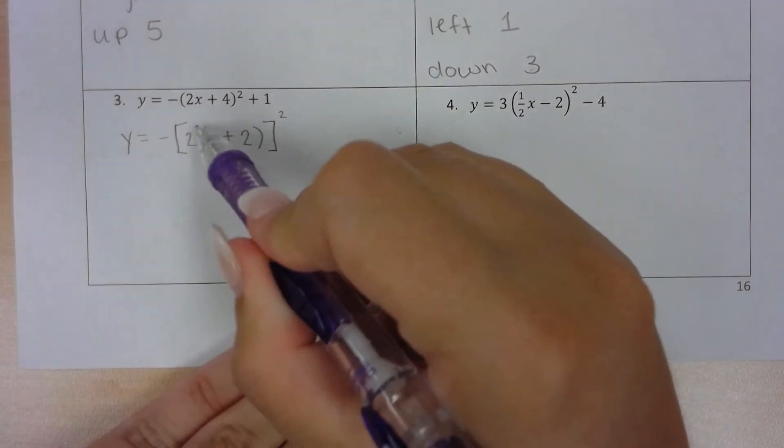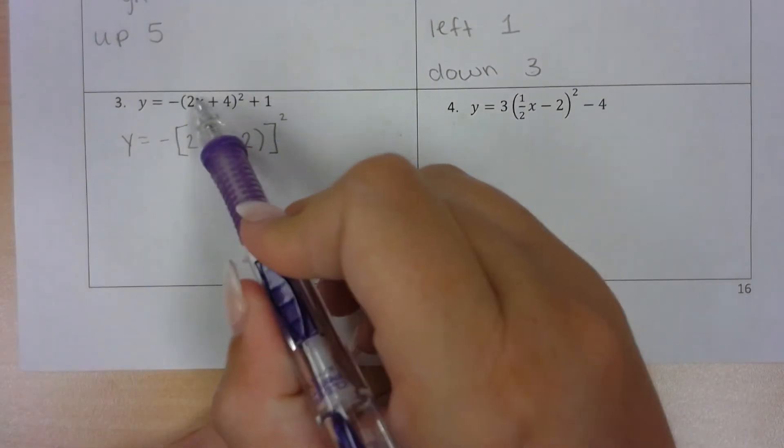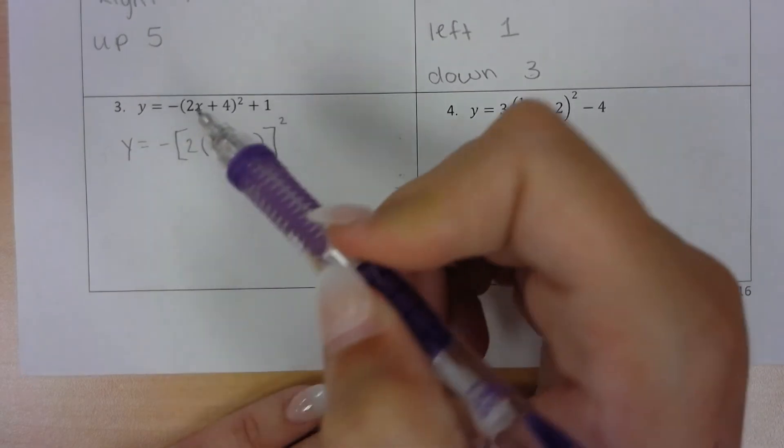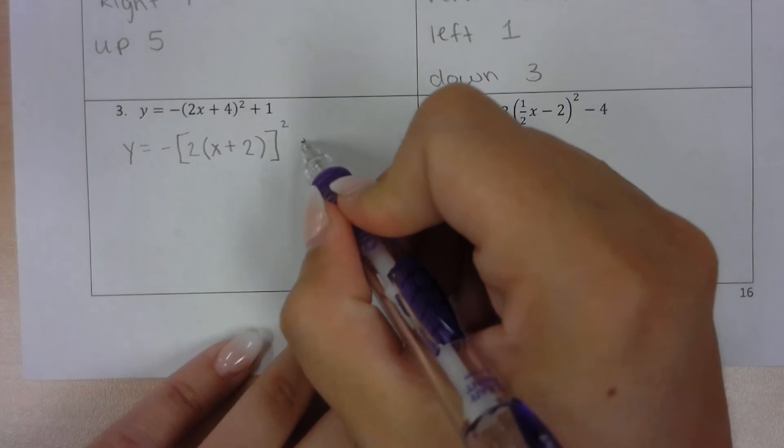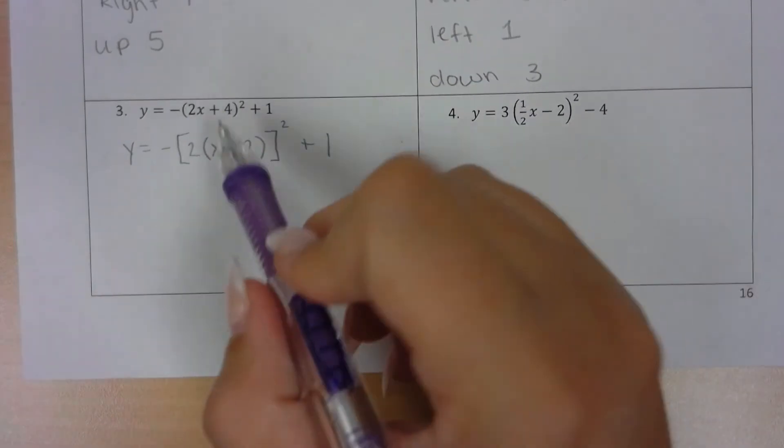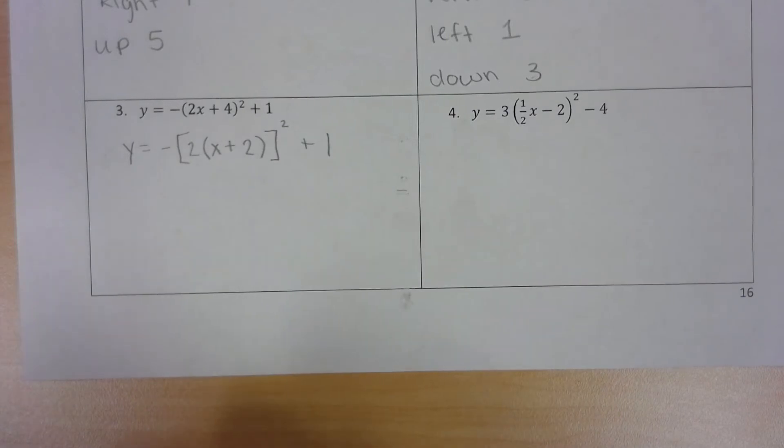Right, if I were to distribute this out, I would have 2x plus 4. So I factored out the GCF of 2. Factoring out, I divide it. 4 divided by 2 left us with 2, and then I have the plus 1. So now that I have no number next to the x, now I can start figuring out what my expansions and compressions are.